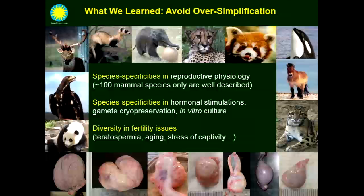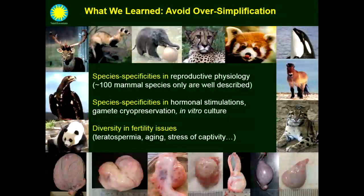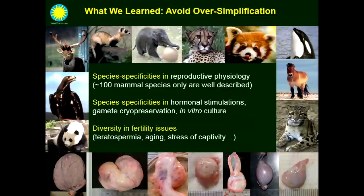Difference in anatomies and reproductive traits — we know that the cheetah has nothing to do with a red panda or a killer whale, but even in the cat family there are a lot of differences. All in all, in terms of knowing the reproductive biology of exotic species, this is just a small number of animals that we know well. There are about 5,500 mammal species on the planet, and we only know really well 100 in terms of reproduction. Those specificities also appear when developing assisted reproductive techniques — hormonal stimulations have to be adapted, as well as cryopreservation and in vitro culture of embryos.